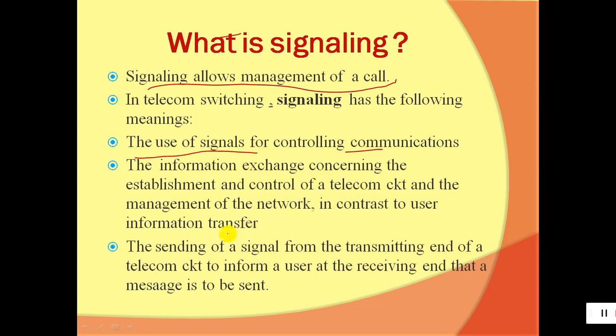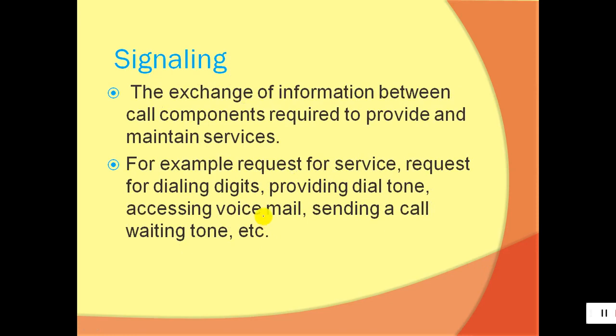Signaling involves the information exchange concerning the establishment, control, and management of telecom circuits and the network, in contrast to user information transfer. It covers how two users establish, maintain, or terminate a call. It also includes sending signals from the transmitting end to inform the user at the receiving end that a message is to be sent — for example, requests for service, dialing digits, dial tone, accessing voicemail, and sending a call waiting tone.